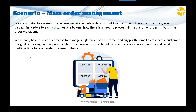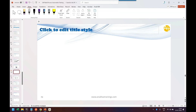That is the requirement and goal we want to achieve: mass order processing. You can think of similar scenarios like dispatching offer letters for many employees in HR, or posting multiple financial documents in finance. The core idea across functional areas is to do something multiple times in a loop. So how can we achieve that with BTP workflow or Build Process Automation?